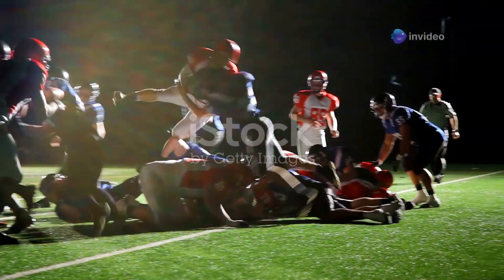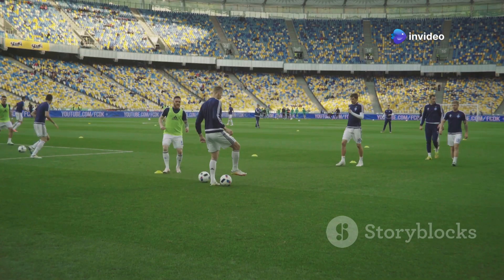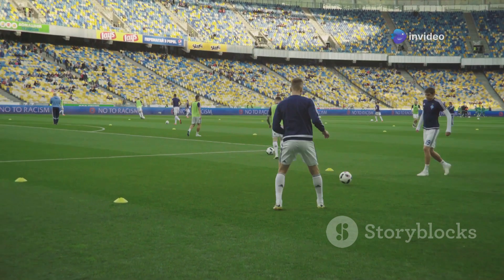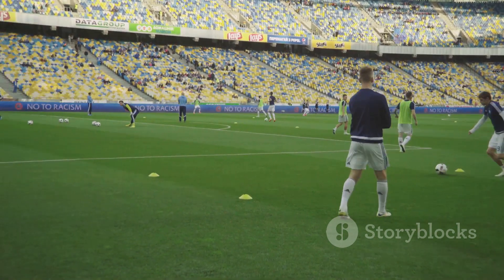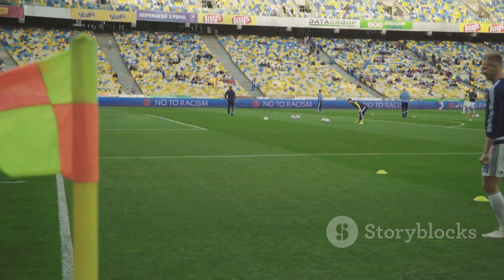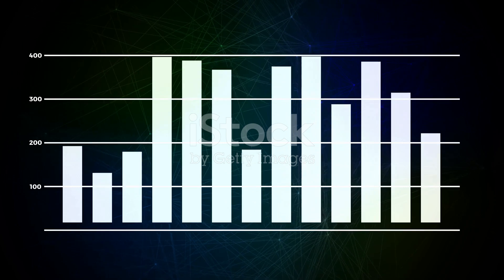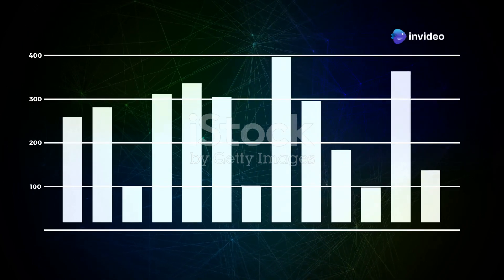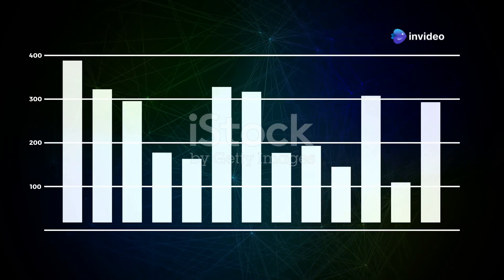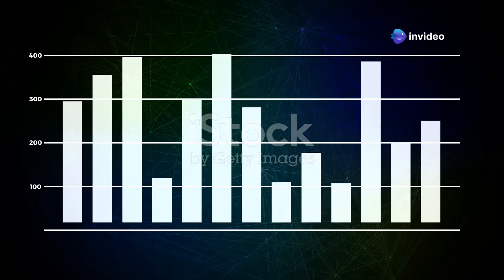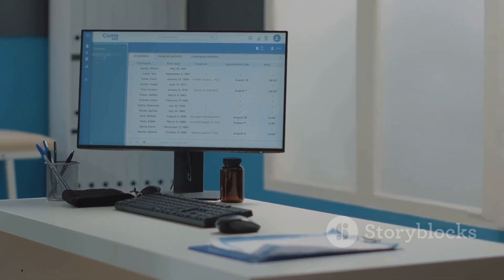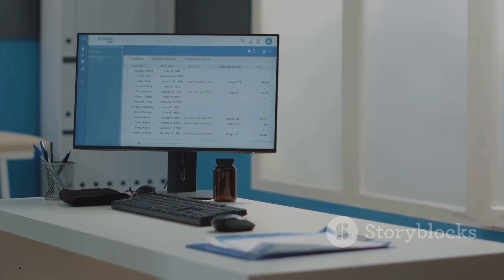Data normalization is like lining up all the players on a football pitch before a match. Just as every player needs to be in the right position to start the game, every piece of data needs to be on the same scale to ensure fair play in analysis. It ensures that all data is on the same scale and prevents certain features from dominating others during analysis — this is crucial for accurate and meaningful insights.